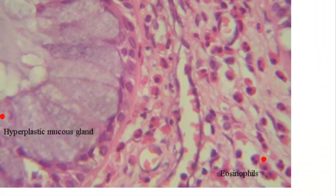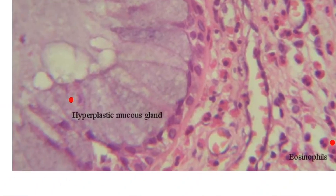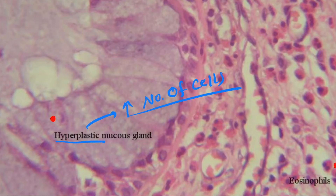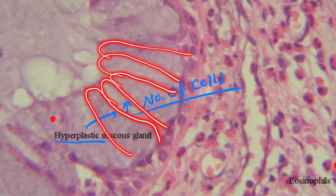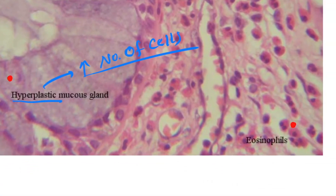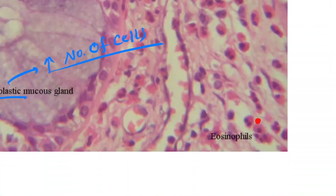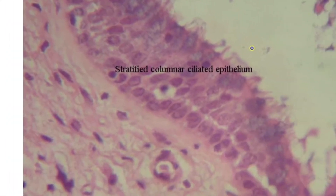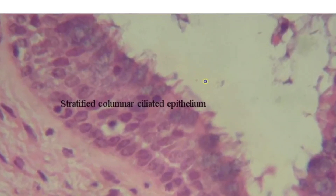In the third histological picture, we can see hyperplastic mucous glands — hyperplasia meaning increased number of cells. You can see the increased number of mucous gland cells here. Also visible are eosinophils. In the next picture, you can see the stratified columnar ciliated epithelium.